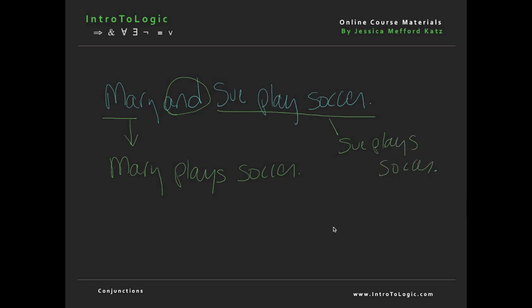These two sentences can be combined with the word 'and' to make the sentence 'Mary plays soccer and Sue plays soccer' — or in other words, 'Mary and Sue play soccer'. Now that we have a better understanding of what a conjunction is, let's look at two rules that involve conjunctions: and introduction and and elimination.